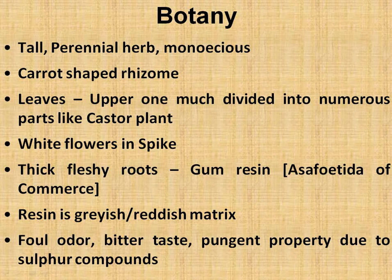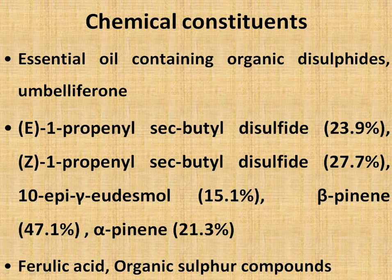This gum resin is grayish or reddish in color. It has a foul odor, is very bad-smelling, has a bitter taste, and is very pungent — due to the sulfur compounds present in this oleo resin. Regarding the chemical constituents, this oleo resin contains some essential oils. The particular smell is due to the presence of sulfur compounds, particularly organic disulfides. It also contains an ambelliferone compound. In the disulfides: E-1-propenyl sec-butyl disulfide is present at 23.9%, Z-1-propenyl sec-butyl disulfide at 27.9%. Additionally, 10-epi-gamma-eudesmol is present at 15.1%, and beta-pinene and alpha-pinene are found at 47.1% and 21.3% respectively in the essential oil. Besides these, ferulic acid is also present, along with other organic sulfur compounds.